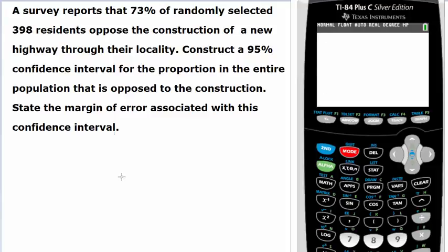We have this information that 73% of randomly selected 398 residents, from a large population, oppose this particular issue. We have to construct a 95% confidence interval for the proportion in the entire population.